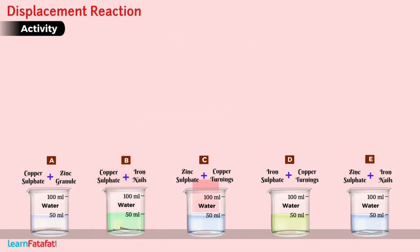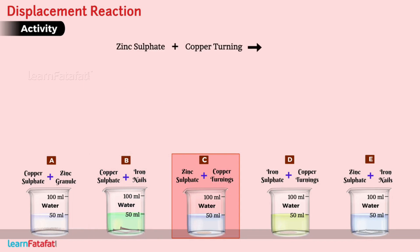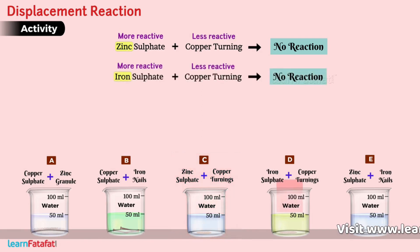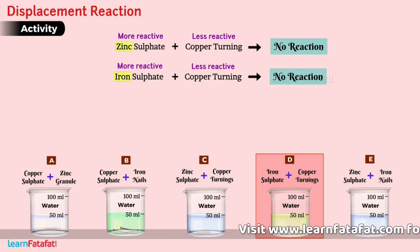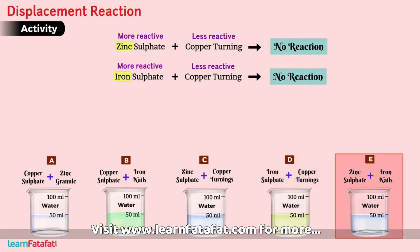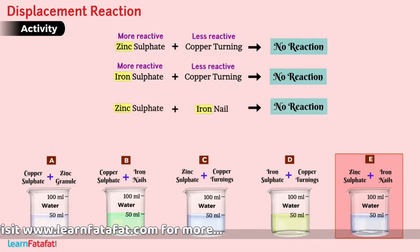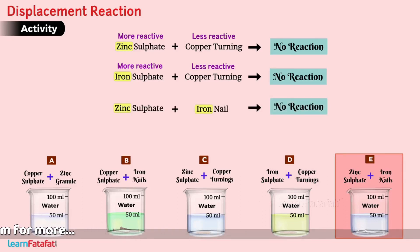In beaker C, copper does not replace zinc, confirming that zinc is more reactive. The same follows in beaker D. In beaker E, iron does not displace zinc from zinc sulphate, meaning that iron is less reactive than zinc.